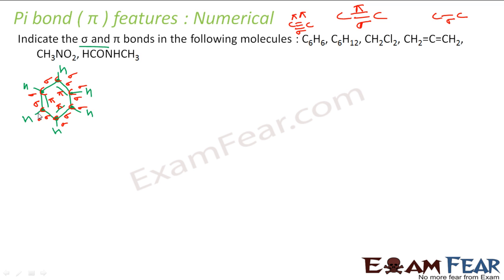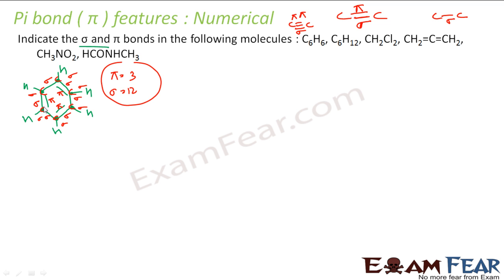So the count is: pi bonds = 3, sigma bonds = 12. Please note that a double bond means there is both a sigma bond and a pi bond — double bond does not mean just pi. In benzene there are 6 sigma bonds for C-H and 6 sigma bonds for C-C, giving 12 sigma bonds total, and 3 pi bonds from the three double bonds.